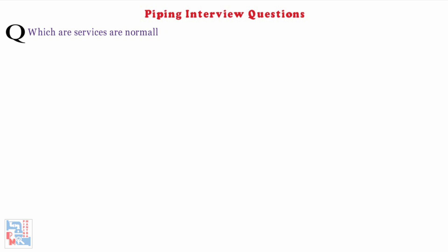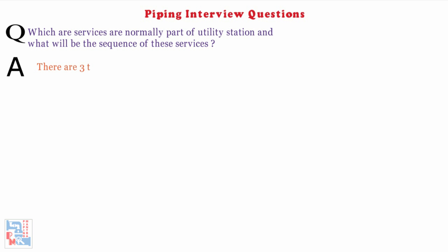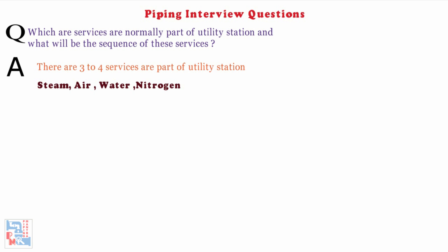What services are normally part of a utility station, and what is the sequence of these services? There are three to four services that are part of a utility station: steam, air, water, and nitrogen. Usually the sequence will be SWAN or NAWS. So that is it for today's video.